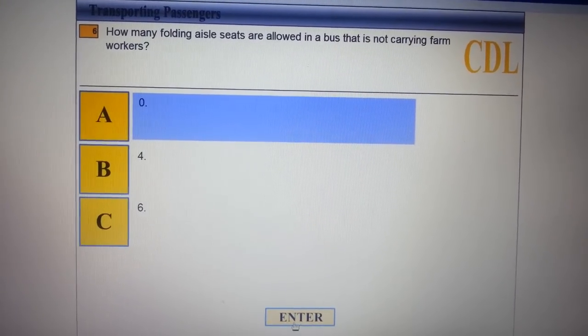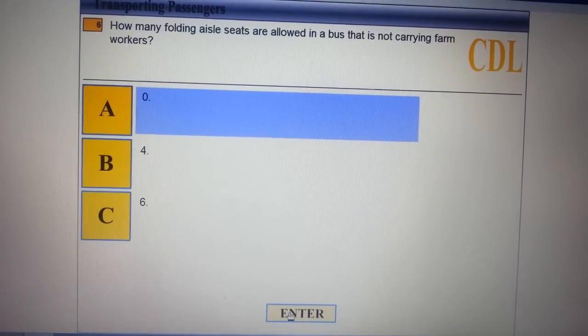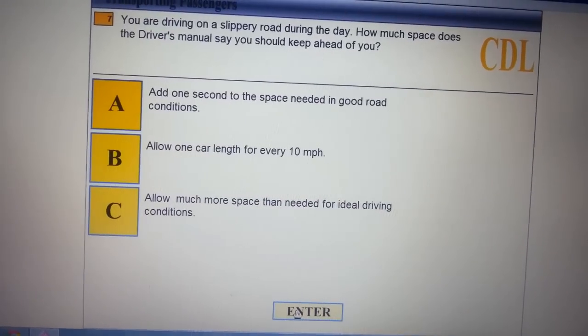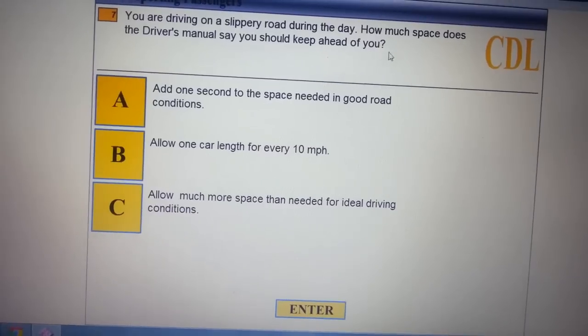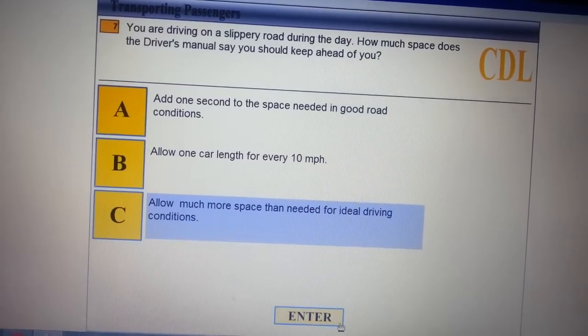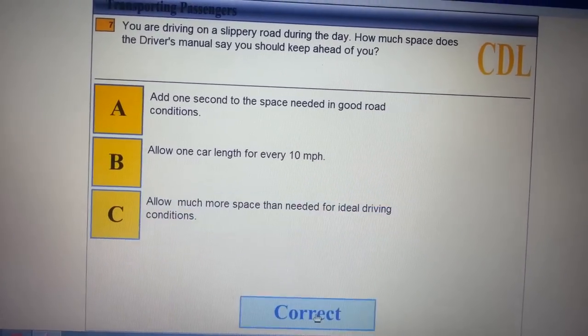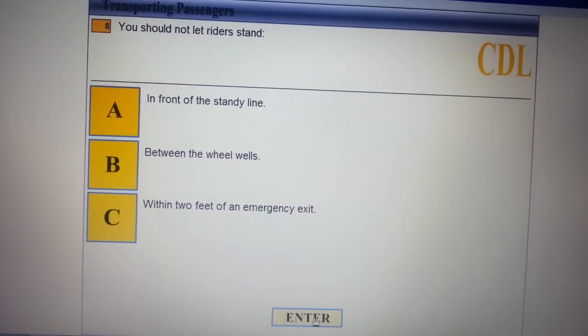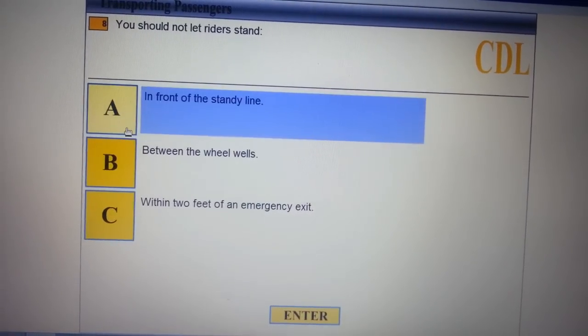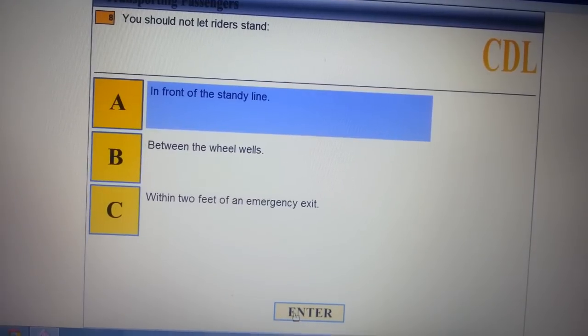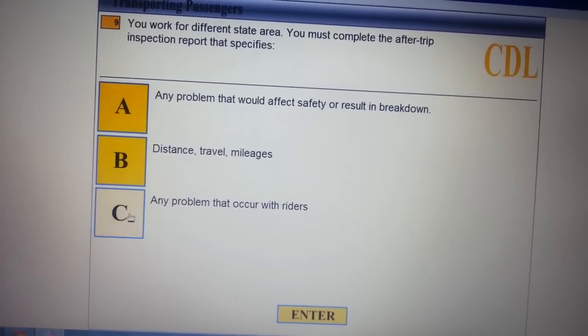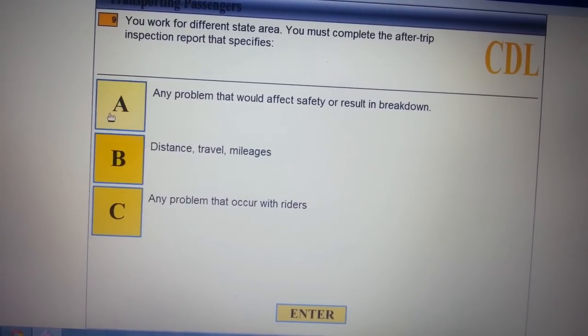How many standees are allowed on the bus? That's zero. You should now prohibit standing in the front or the aisle. You work differently, stay here. You must complete the pre-trip inspection program.